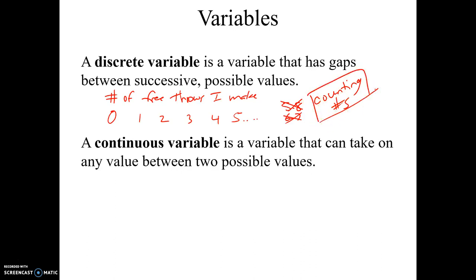On the other hand, a continuous variable is a variable that can take on any value between two possible values. And again, the keyword here is it can take on, like it's possible. So for example, if I'm going to go around and measure the lengths of people's fingers.